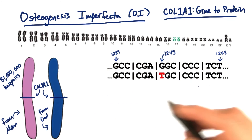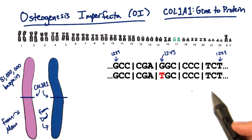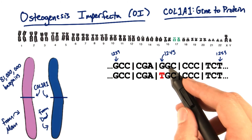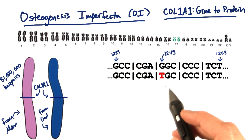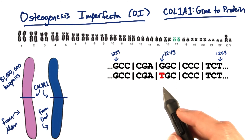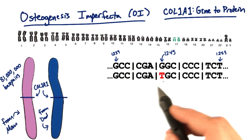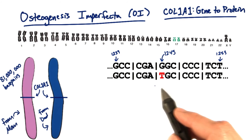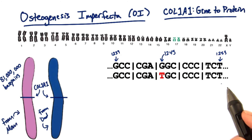One mutation of the Col1A1 gene contains a G to T — a guanine to thymine mutation — at position 1245 of the coding region.